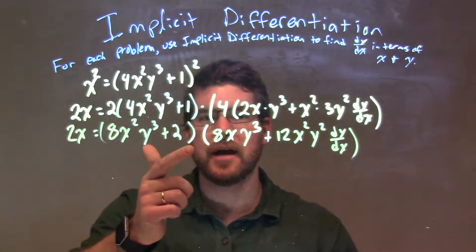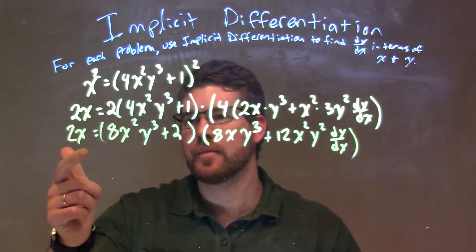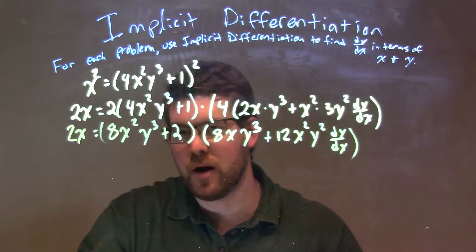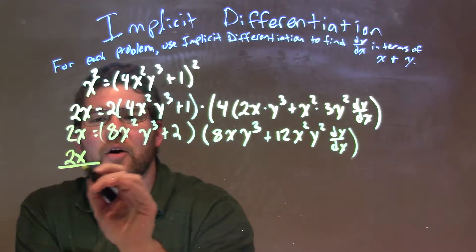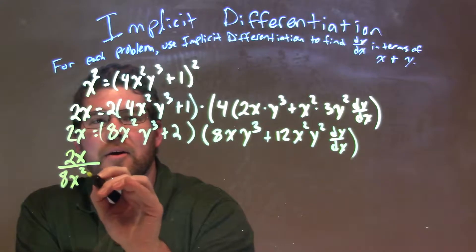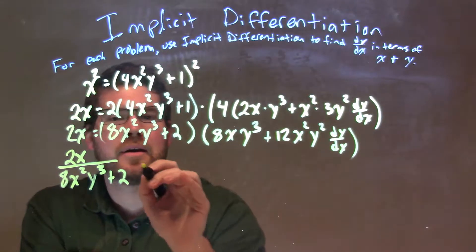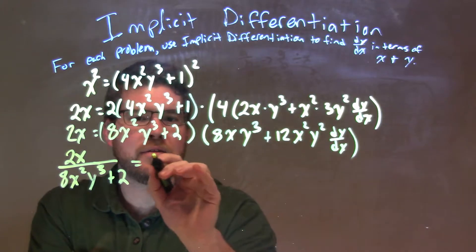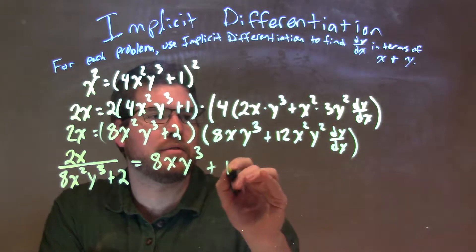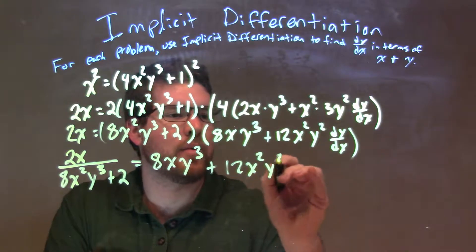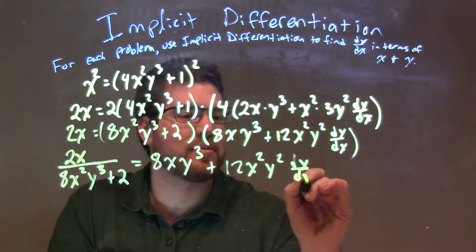So, I'm going to divide both sides by this: divide both sides by 8x squared y to the third plus 2, leaving me with 2x over 8x squared y to the third plus 2, equals all this: 8xy to the third plus 12x squared y squared dy/dx.